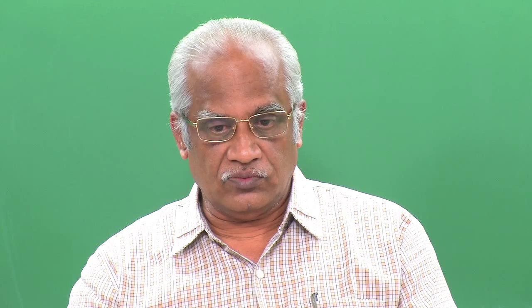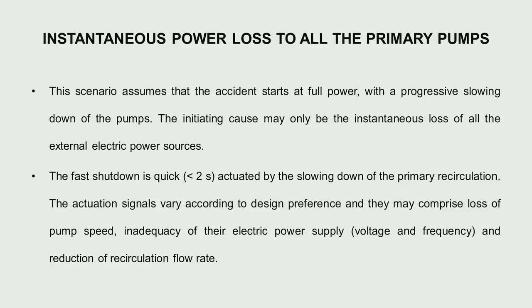Another scenario: there is an instantaneous power loss to all primary pumps. The primary pumps receive no power. They have some inertia in their drive system, so they slow down gradually, but the power is gone. This is an unsafe situation, so we trip the reactor in less than 2 seconds. The flow reduction also gives a signal, and loss of voltage at the pump — many signals together ensure a shutdown of the reactor.